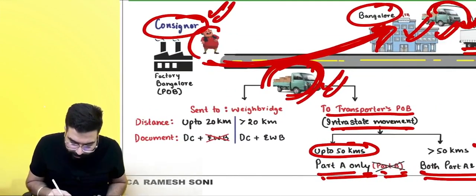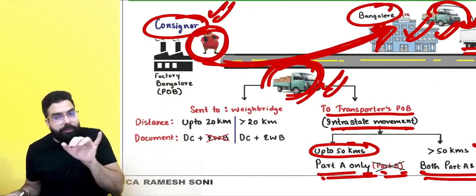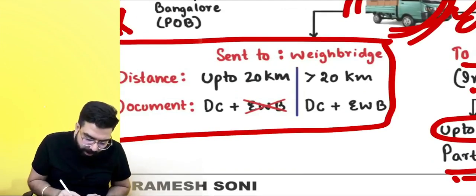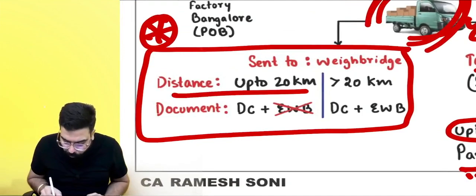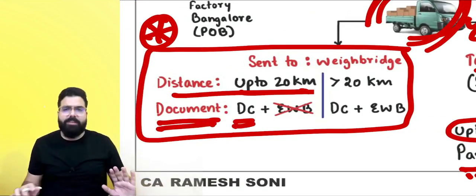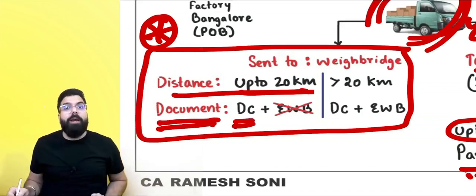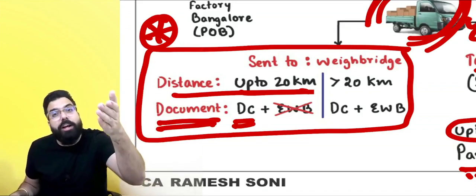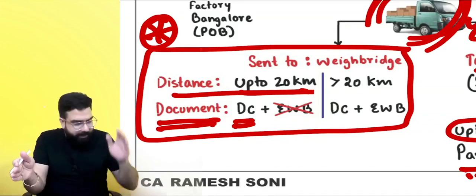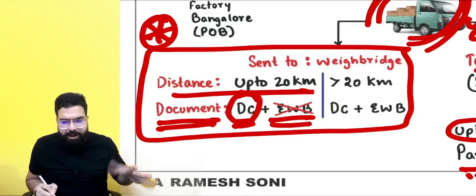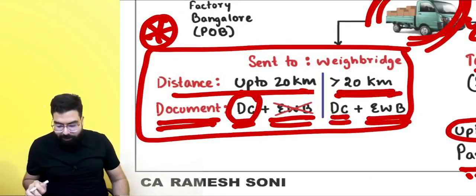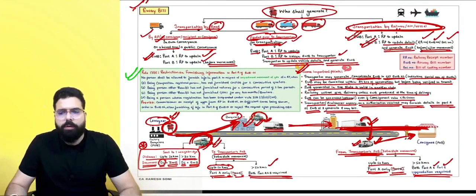Special exception: if you are sending goods to a weighing bridge (dharam kata) just for weighing the loaded truck, and the distance from your premises to the weighing bridge is up to 20 kilometers, no e-way bill is required at all — not even Part A or Part B. A delivery challan alone is sufficient. But if the distance is more than 20 kilometers, a delivery challan plus e-way bill are both required.